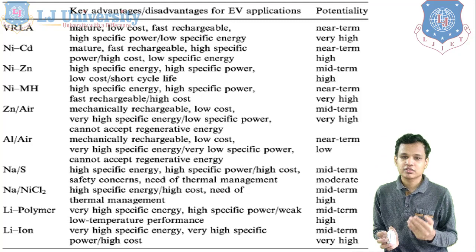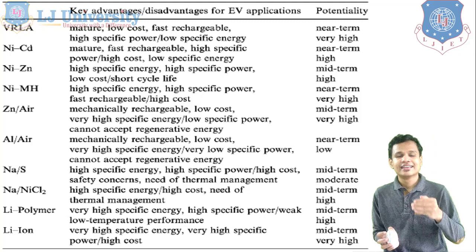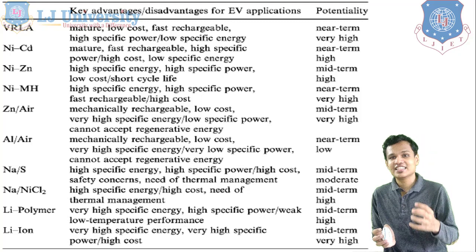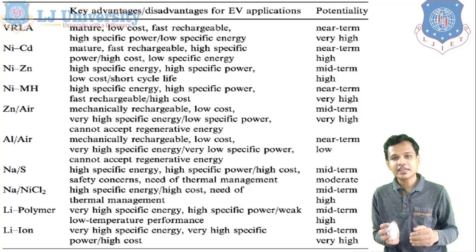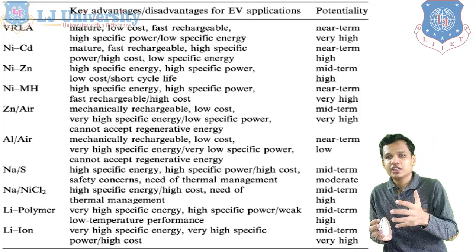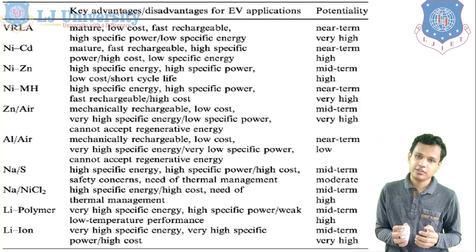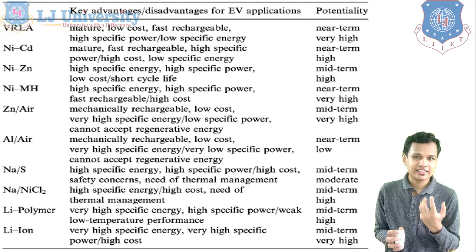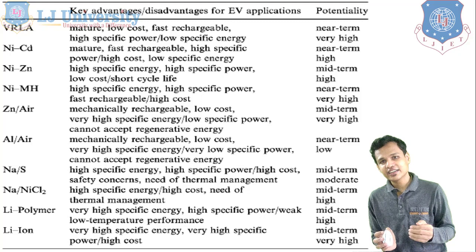The zinc air battery is mechanically rechargeable, low cost, and has very high specific energy. The disadvantages are low specific power and it cannot accept regenerative energy because it is not electrically charged, so regenerative braking energy will not be accepted. In the medium term, it will take some time to reach high potentiality. The aluminum air battery is also mechanically rechargeable, low cost, very high specific energy, but low specific power and cannot accept regenerative energy. In the near term, it has very low potentiality because of these disadvantages.